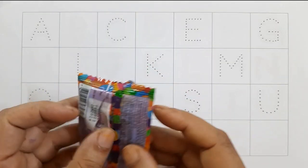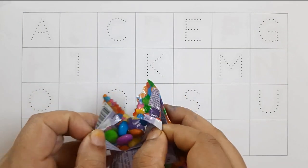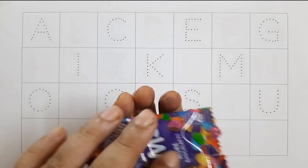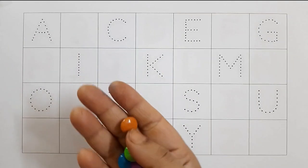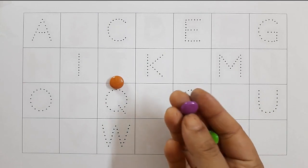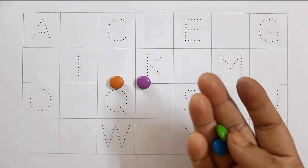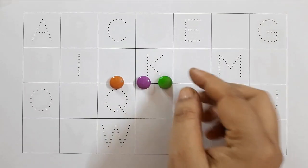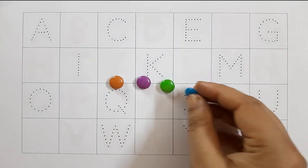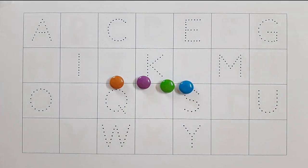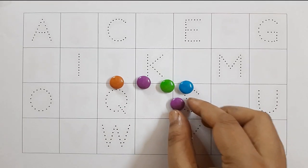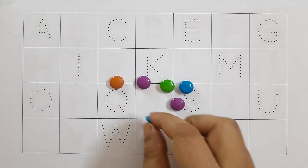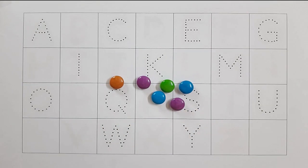Color name. Orange color, purple color. Light green color, sky blue color. Purple color, sky blue color, yellow color, orange color.